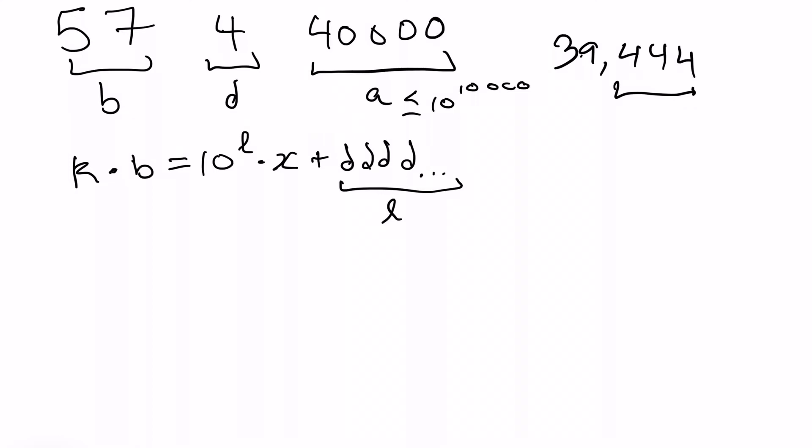So let's take this equation and consider this equation modulo b to get rid of this side. So now we have 0 is equivalent to 10 to the L times x plus, again, this D repeating string modulo b.